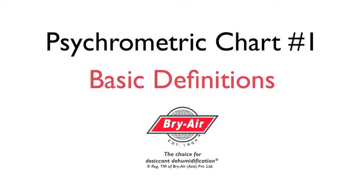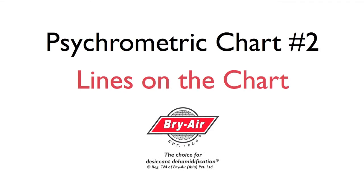In the first video we defined the terms used on the psychrometric chart. Here we'll show you where each property lies on the chart and demonstrate using the intersection of two properties to find the others.